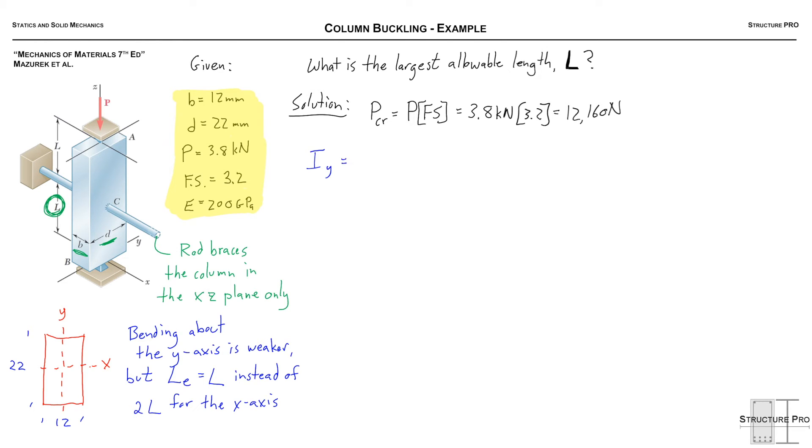So first let's do IY. So I in the Y direction we know that this equation is just bH cubed over 12 and that's shown there. So we get 3,168 millimeters to the power 4 and a very similar thing for IX and we know that's going to be quite a bit different because that's the strong axis, 10,648.